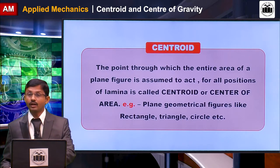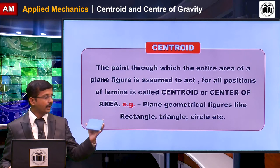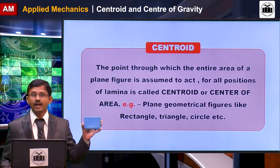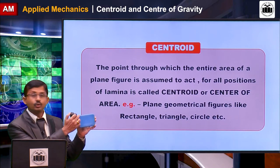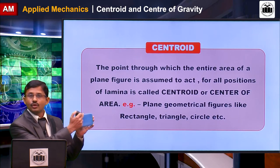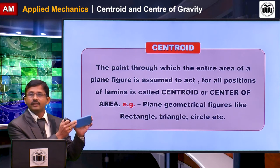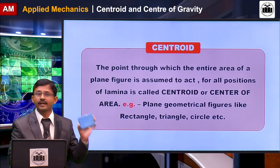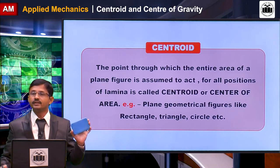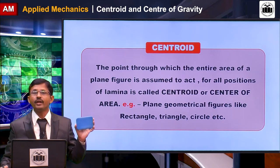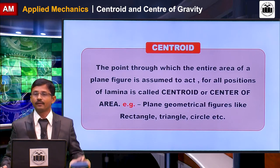If you take a plane lamina — for example, a rectangle — it is called a plane lamina because it has two dimensions B and D and the thickness is very negligible. So the weight of this particular rectangle is very negligible, and hence we have to find out the centroid of this particular rectangle.